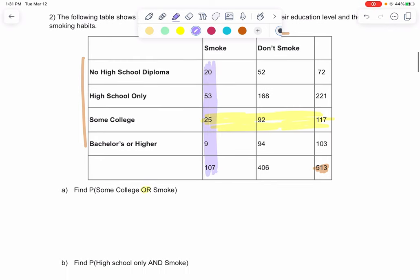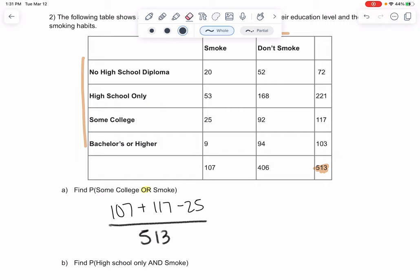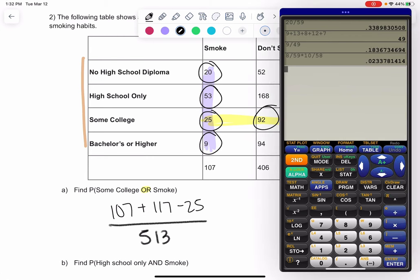So this is where we have to be careful of double counting. It means it could be in either category. It's out of 513, and then we can take the 107 and the 117, but then the issue is the 25 gets double counted. So you could do 107 plus 117 and take away the 25. Other options would include just adding the individual pieces. So rather than looking at totals, we could just add all of the boxes that are in either category. 20 is part of smoking, 53 is part of smoking, 25 is part of both so it's still included, 9 is part of smoking, and 92 is part of some college so it counts.